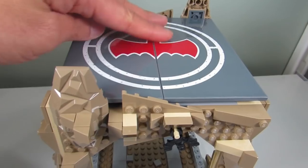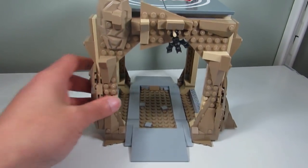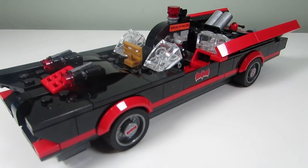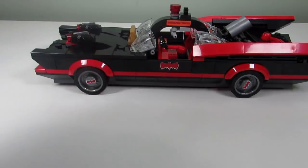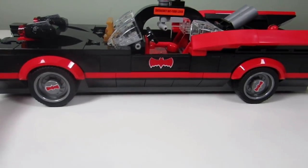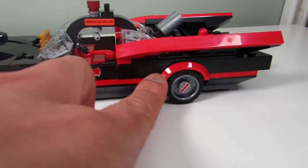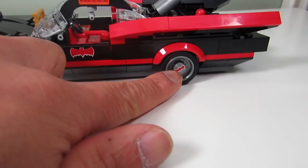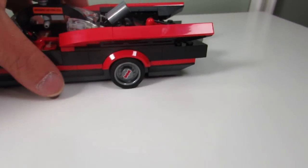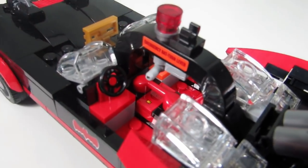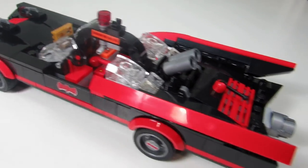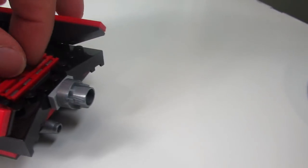Here is the classic Batmobile and I think this looks awesome, one of the better builds in this set. I love the red stripe that they have here, looks really sleek. These are printed little circular tiles with the bat symbol on it which is a nice touch. Inside we got some detail, we got the bat phone, we got a little siren at top.